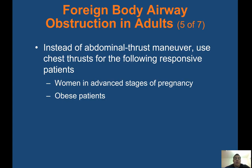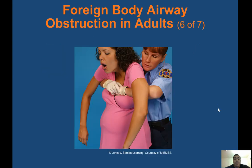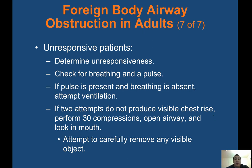Instead of the abdominal thrust, use chest thrusts for women in advanced stages of pregnancy and for obese patients who are harder to reach around. For unresponsive patients: if two ventilation attempts don't produce visible chest rise, perform 30 compressions, open the airway, look in the mouth and attempt to carefully remove any visible object. Do not perform blind finger sweeps — you may push the object further down.